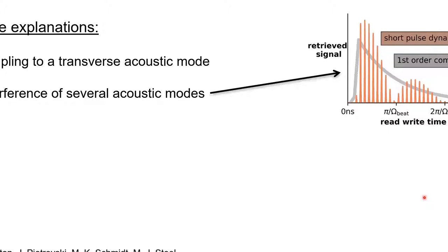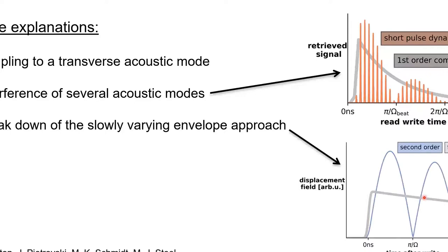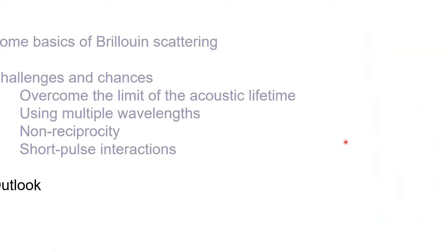The question is where does this come from? There are different possible explanations. Either we couple to a transverse acoustic mode, we have maybe several acoustic modes interfering, or, which is much more interesting to us from a fundamental point of view, this is the breakdown of the slowly varying envelope. That means we need to take into account also higher order derivatives in our coupled mode equations. Our simulation actually showed that this would lead to such an interference pattern.